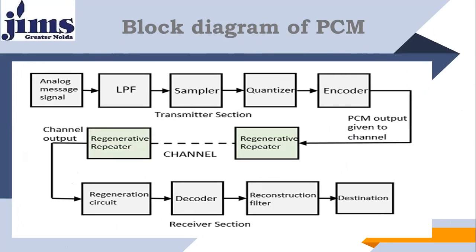The PCM signal then reaches the receiver side. First, there is a regeneration circuit. Then there is a decoder — decoding is the inverse of encoding. If the encoder converts values like 4, 3, 2, 1 into binary 1, 0, 1, 0, then the decoder converts them back into 4, 3, 2, 1. After decoding, there is a reconstruction filter whose function is to shape the signal and match it with the original analog signal that was sent from the transmitter. This is the complete picture of the PCM system.